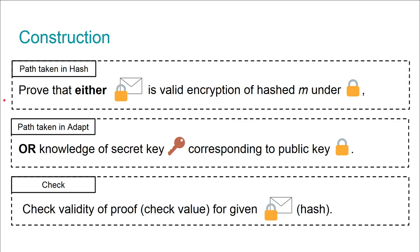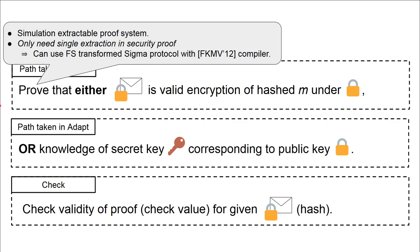To make our scheme secure, we require a simulation-sound extractable proof system. However, we only need a single extraction in our security proof. That means we can use a Fiat-Shamir transform Sigma protocol using the compiler by Faust et al.